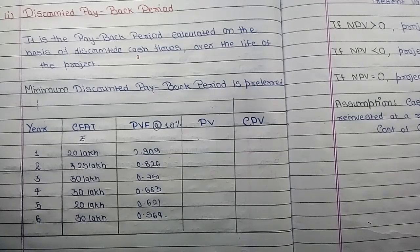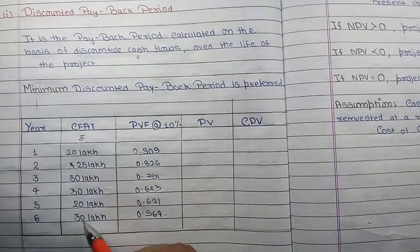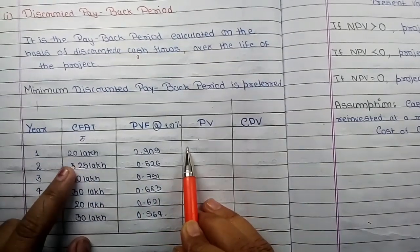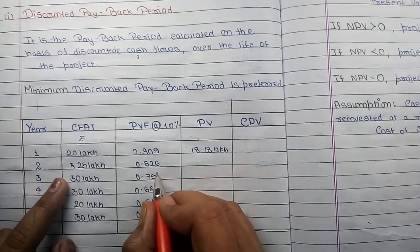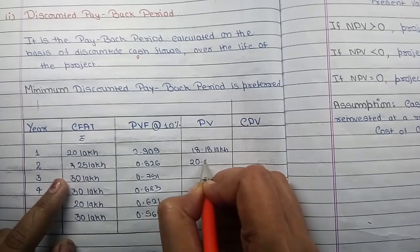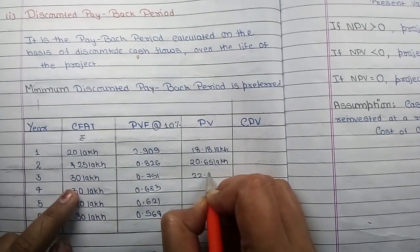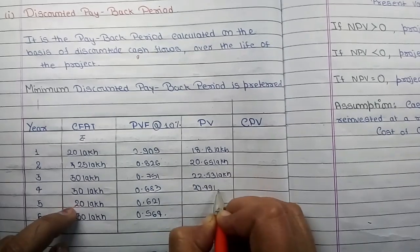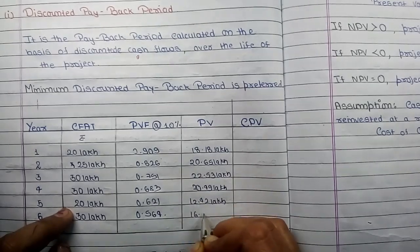I hope you understand how to calculate PVF, that is present value factor. Now we will calculate present value. For calculating present value we multiply cash flow after tax by present value factor. So 20 lakh × 0.909 = 18.18 lakhs; 25 lakh × 0.826 = 20.65 lakhs; 30 lakh × 0.751 = 22.53 lakhs; 30 lakh × 0.683 = 20.49 lakhs. Similarly, the remaining two are 12.42 lakhs and 16.92 lakhs.